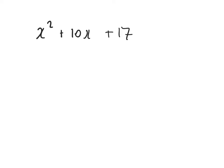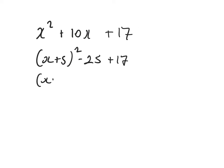Remember that we half the 10 down to a 5 and create a square bracket. 5 squared is 25, we get rid of that and still add on the 17, and that would be x plus 5 all squared minus 8.